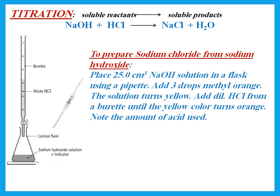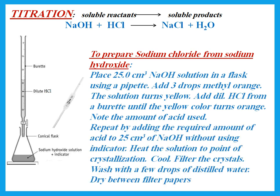We need an indicator because both solutions are colorless — so we add three drops of an indicator. We can use either methyl orange or thymolphthalein. Adding methyl orange to sodium hydroxide turns the solution yellow. Then we add dilute HCl from the burette until the yellow color turns to orange, and we note the amount of acid used. Now we know how much acid to add to 25 cm³ of sodium hydroxide.